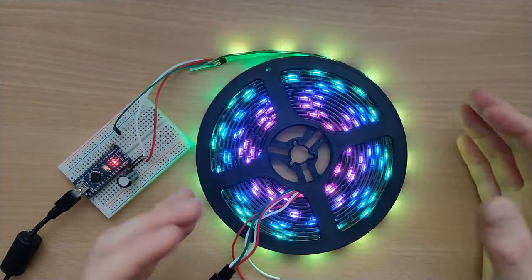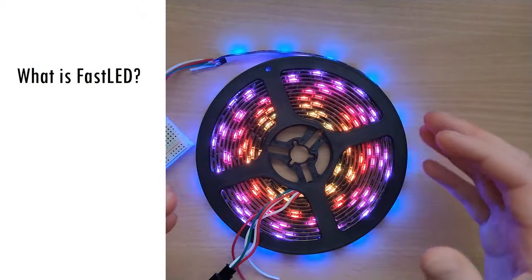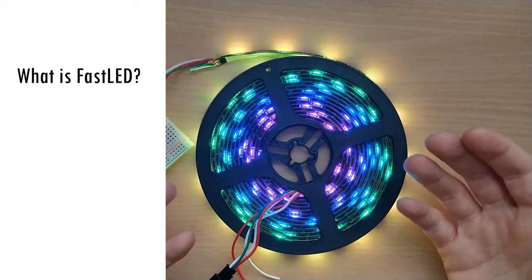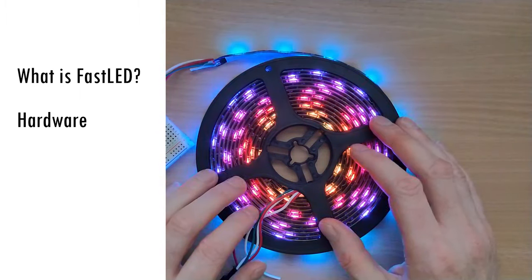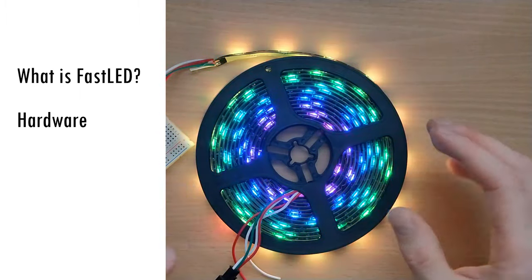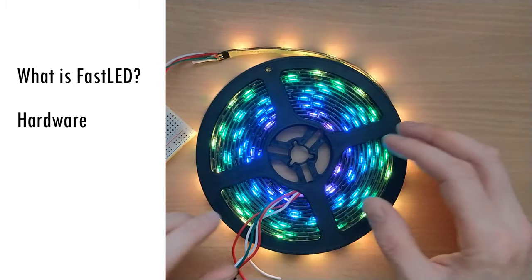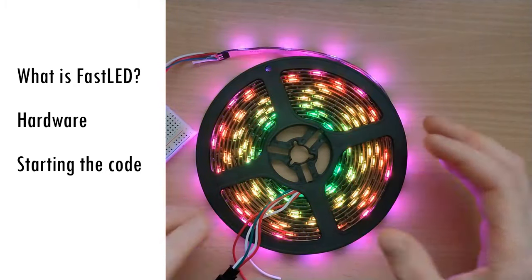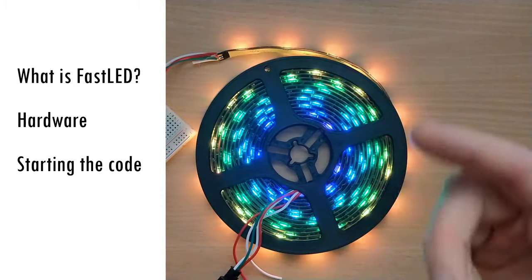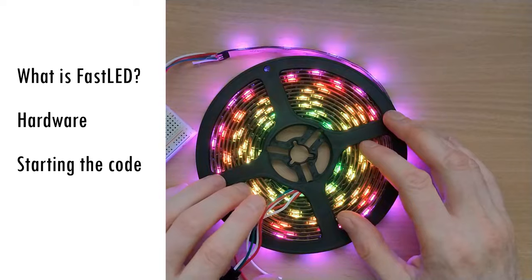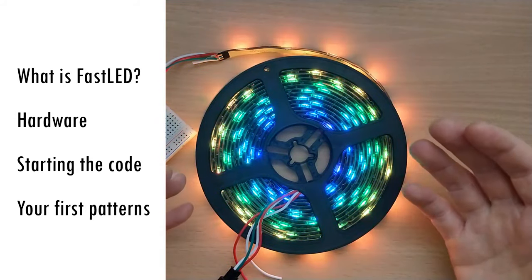Today we're going to cover a number of introductory topics. They are: what FastLED is for and why you might want to use it, the hardware you need, how to connect it up and a few notes on power delivery, how to start your code, the setup function and the FastLED loop, and finally just writing your first simple pattern.